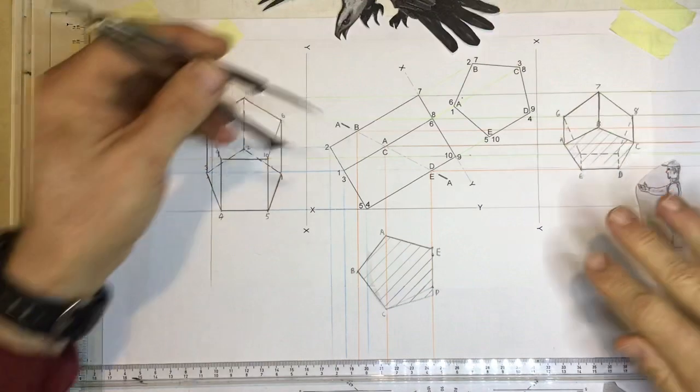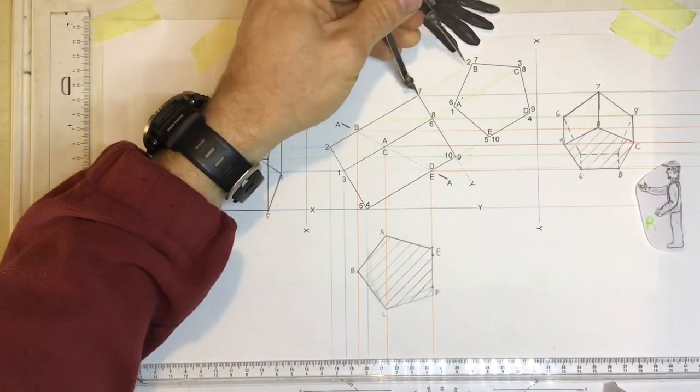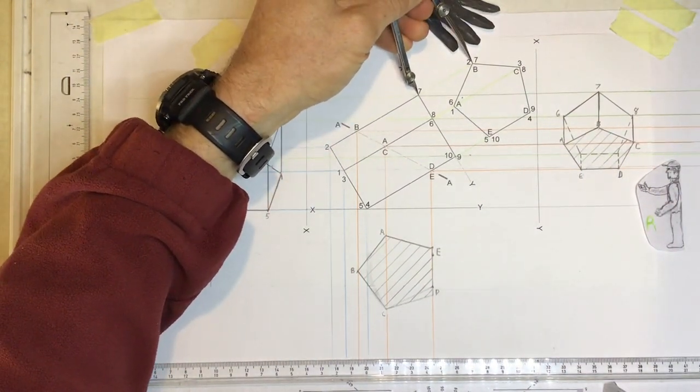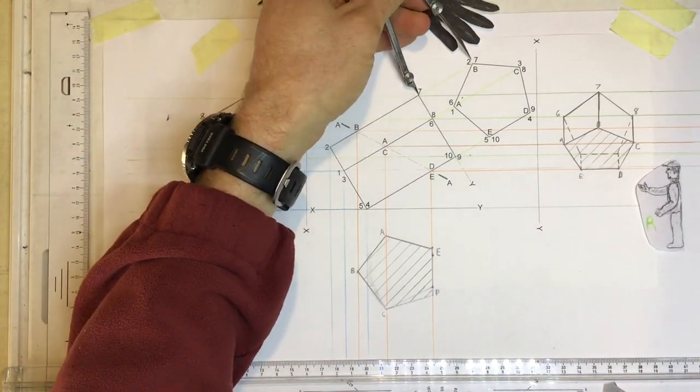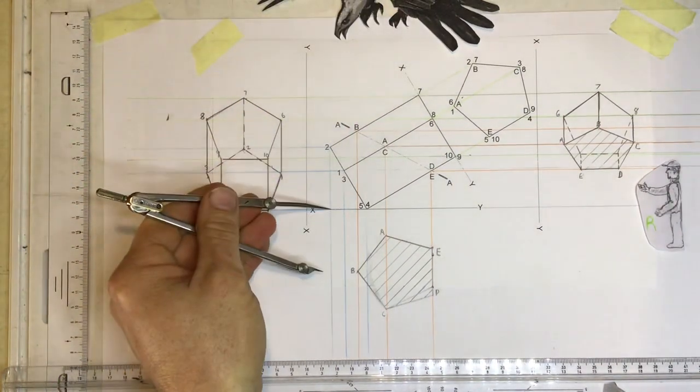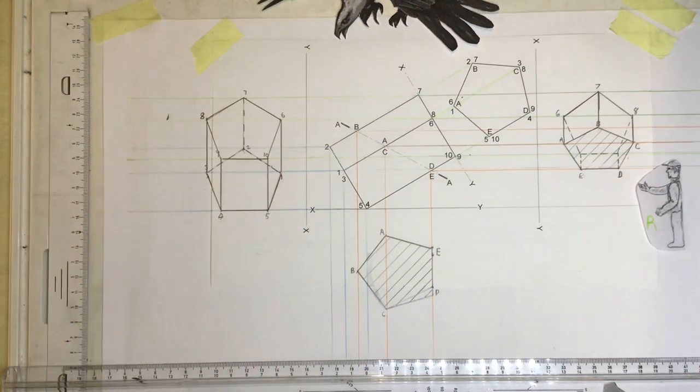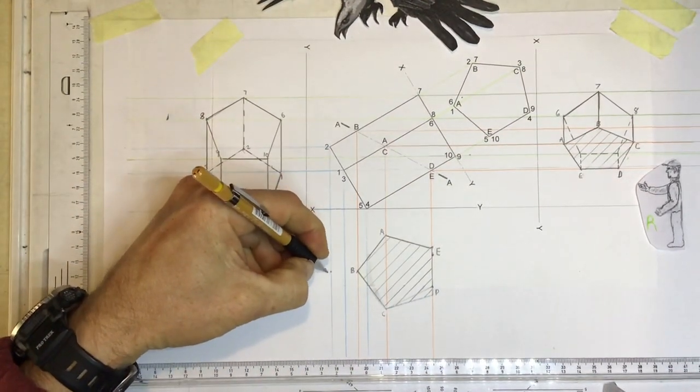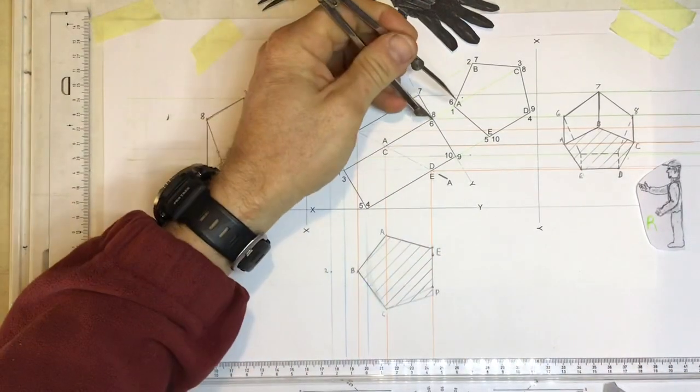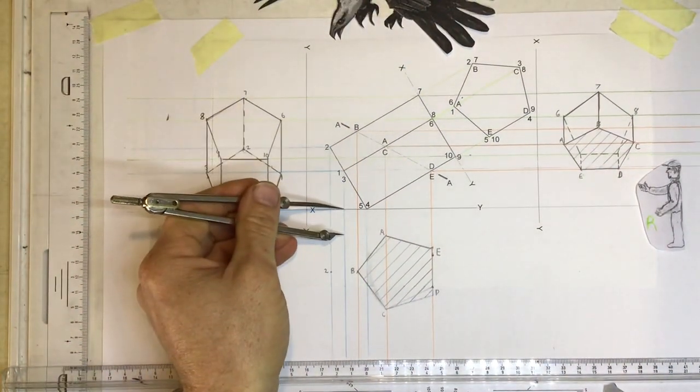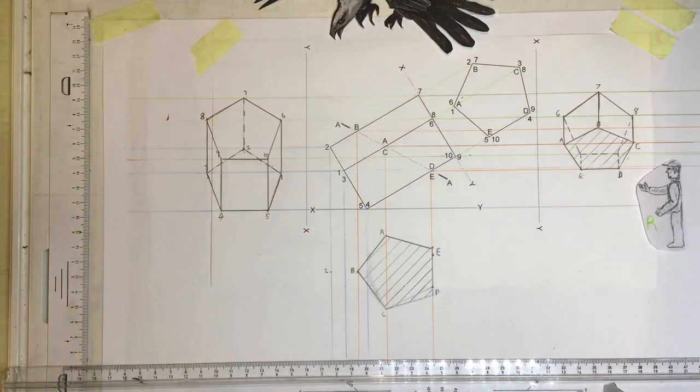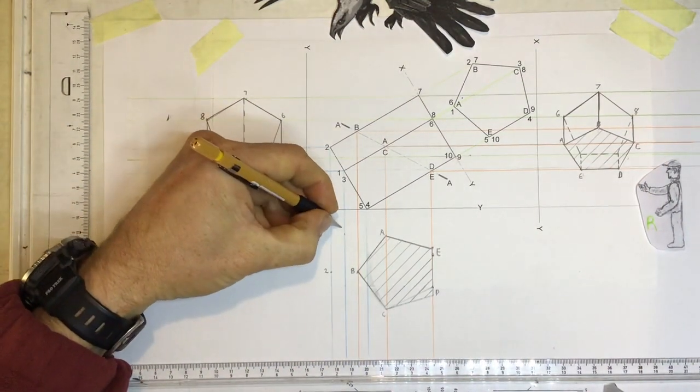Two ways of doing that. We can transfer the points from the XY axis over here. Find two, so there's two over there, find two over there, come down over here, place that down over there, mark it off as two. Do the same thing with one, take it from the XY axis, find one over here, come down, place it over here and mark it off as one.